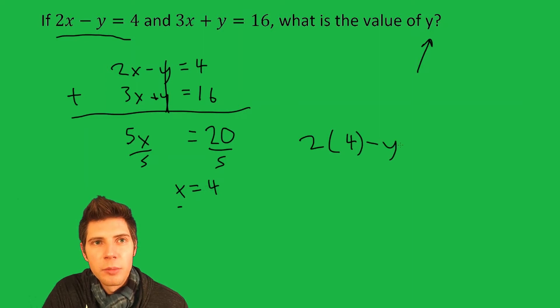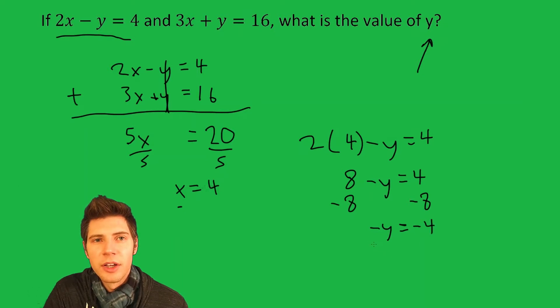2 times 4 is 8, so it's 8 minus y equals 4. Then we'll subtract 8 from both sides: negative y equals negative 4. And then divide by negative 1 and we get y equals 4.